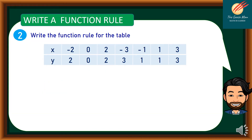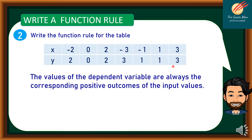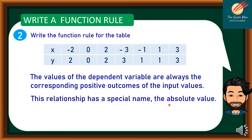For example number 2, write the function rule for the table. We have values of x and y: negative 2 maps to 2, 0 maps to 0, 2 maps to 2, negative 3 maps to negative 1 — wait, observe that the values of the dependent variable y always correspond to positive outcomes of the input values. This relationship has a special name: the absolute value. Therefore, f of x is equal to the absolute value of x.